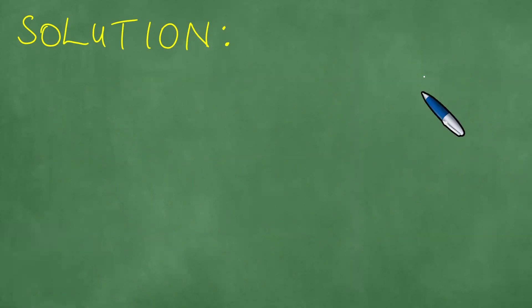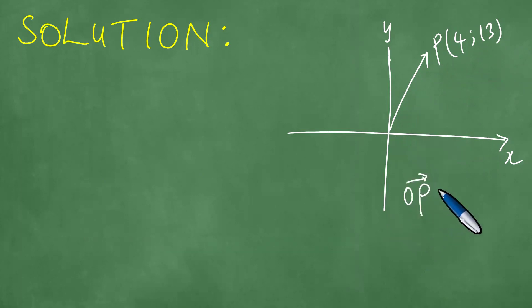So we first draw this Cartesian plane here. And then now, we have the point P with coordinates 4 and 13. The point P has coordinates 4 and 13 justified by the fact that the position vector of P is 4 and 13. Moreover, we have that this is the origin, O.